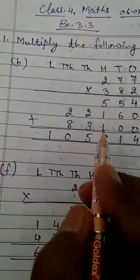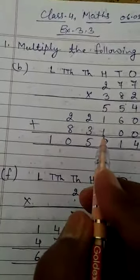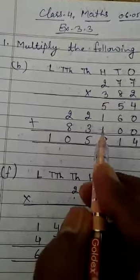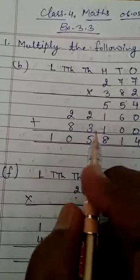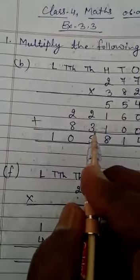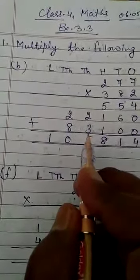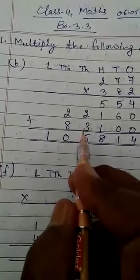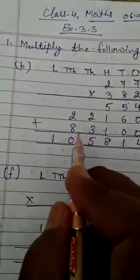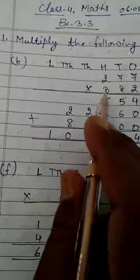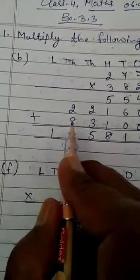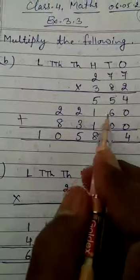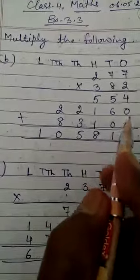So 3×7 is 21 — 1 we will write at hundreds place, 2 will be carried. 3×7 is 21 plus 2 carry is 23 — 3 we will write at thousands place, 2 will be carried. And 3×2 is 6 plus 2 carry is 8 — we will write at ten-thousands place. Now we have completed the multiplication.